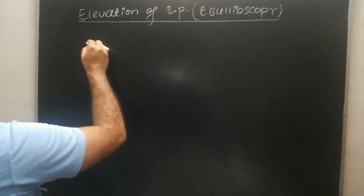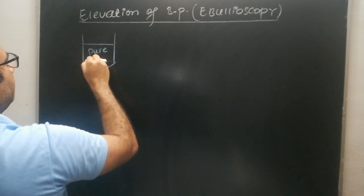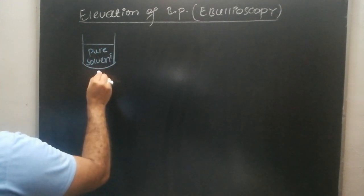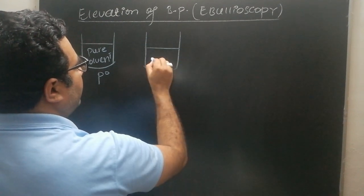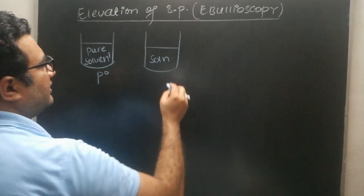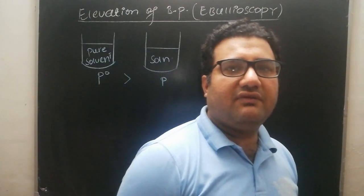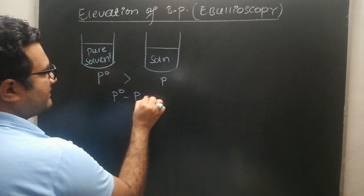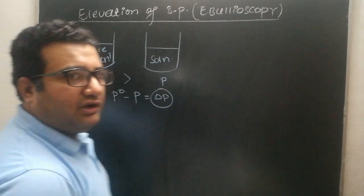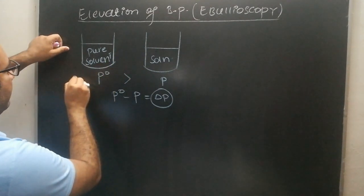Now, why does the boiling point of the solvent actually increase? Suppose this is the pure solvent. Its vapor pressure is shown with the symbol P0. In this pure solvent you mix some non-volatile non-electrolyte solute and it is changed to solution form. Now its vapor pressure is P. P0 is always greater than P — the vapor pressure of the pure solvent is always greater than the vapor pressure of the solution. P0 minus P is delta P, called the lowering of vapor pressure. Since vapor pressure of the pure solvent is greater, its boiling point will be lesser.